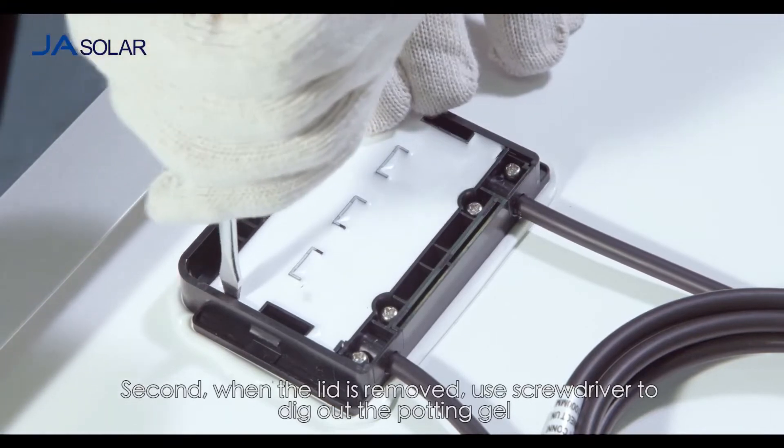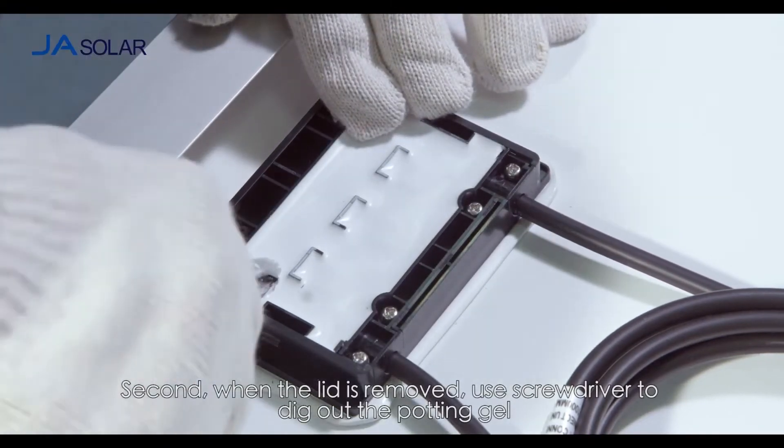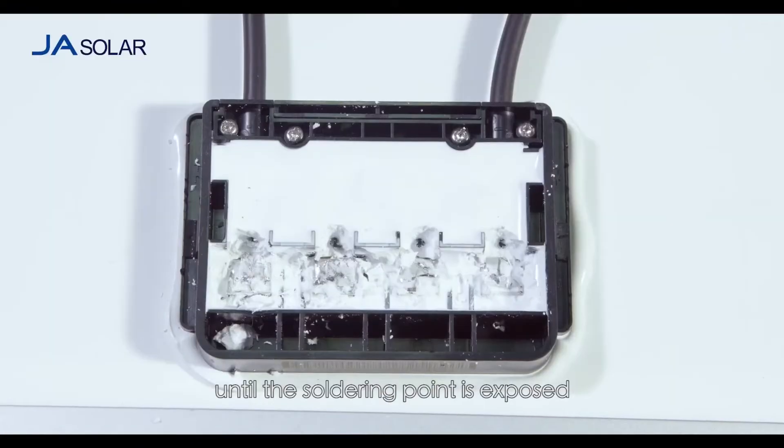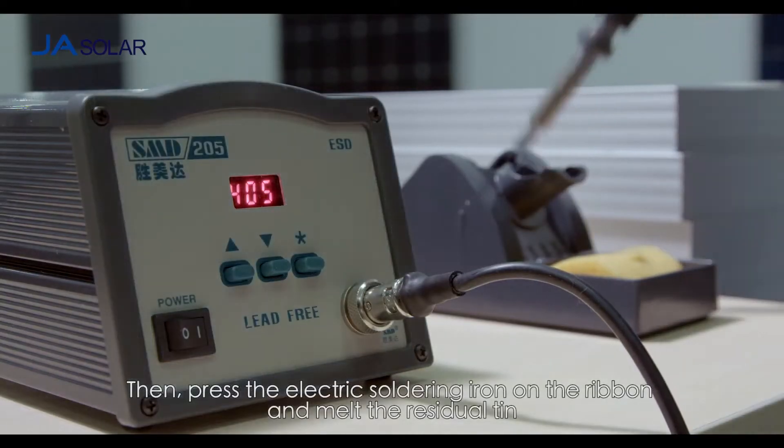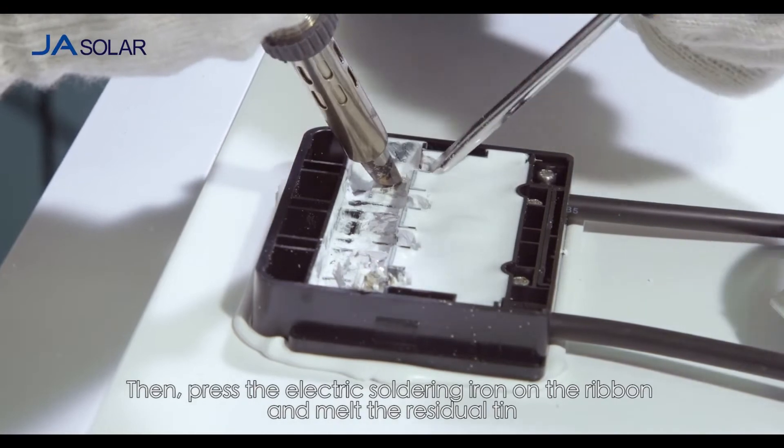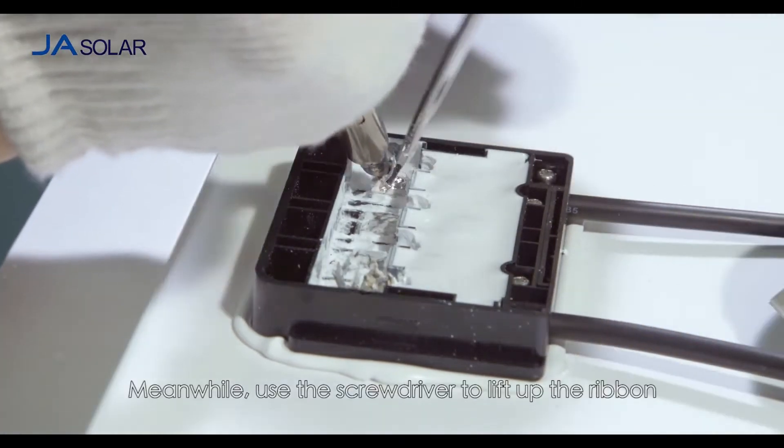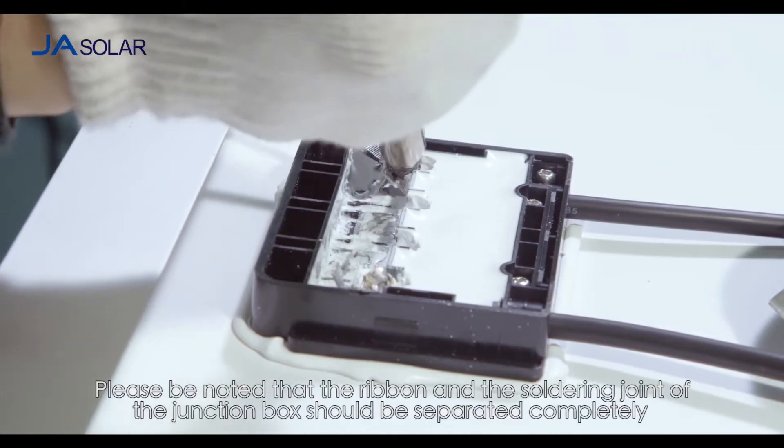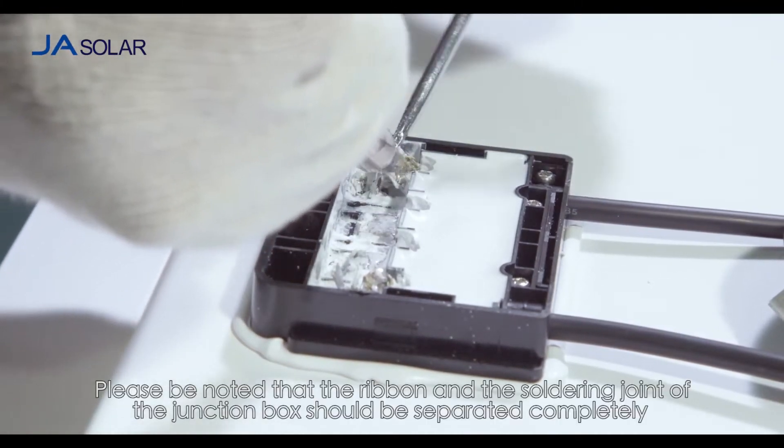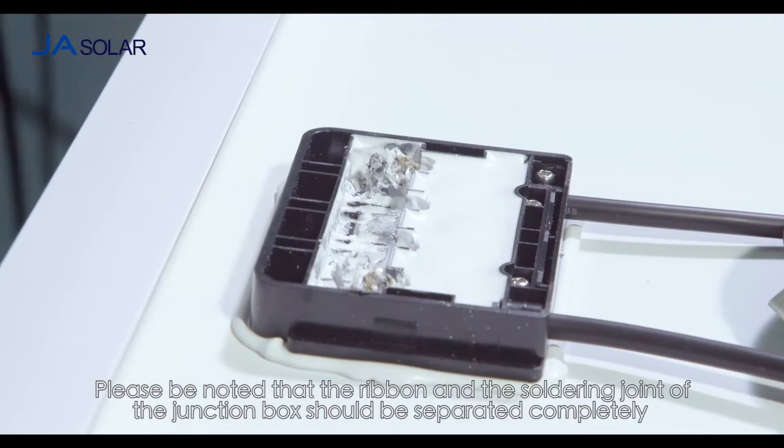Second, when the lid is removed, use screwdriver to dig out the potting gel until the soldering point is exposed. Then, press the electric soldering iron on the ribbon and melt the residual tin. Meanwhile, use the screwdriver to lift up the ribbon. Please note that the ribbon and the soldering joint of the junction box should be separated completely.